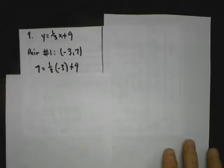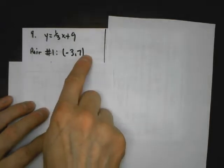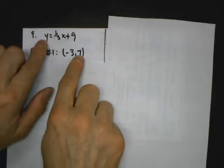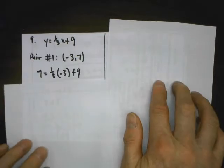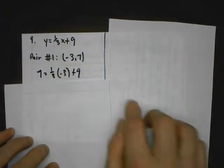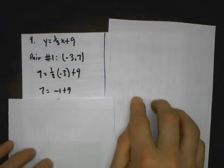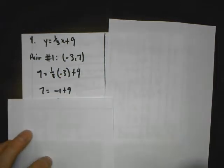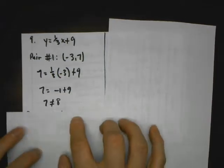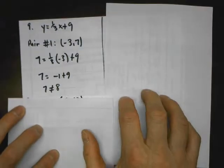Number 9: we have an equation and we have to see which ordered pairs are solutions. The equation is y equals 1/3 x plus 9. I test the first point — this is x and this is y. I put y where the y goes and x where the x goes. 1/3 times negative 3: make that a fraction, cross out your 1's — 1/3 of negative 3 is negative 1. Negative 1 plus 9 does not equal 7, so that is not a solution.